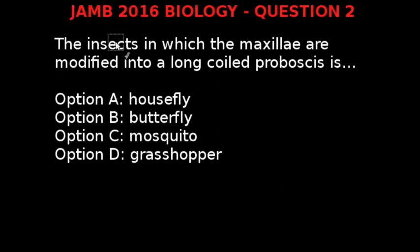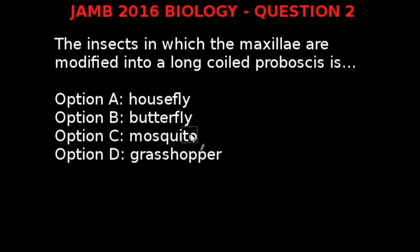JAM 2016 Biology Question 2. The insect in which the maxilla are modified into a tube called a proboscis is: Option A: Housefly. Option B: Butterfly. Option C: Mosquito. Option D: Grasshopper.